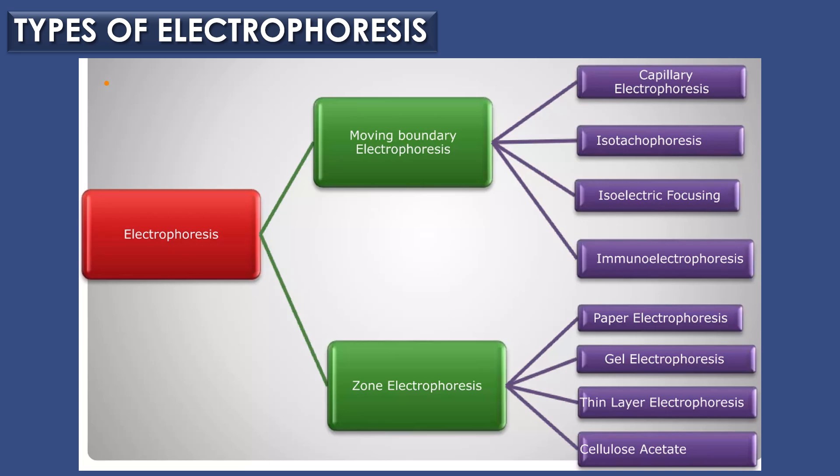Types of electrophoresis: electrophoresis is basically divided into two types — moving boundary electrophoresis and zone electrophoresis. Moving boundary electrophoresis is further categorized into four types: capillary electrophoresis, isotachophoresis, isoelectric focusing electrophoresis, and immunoelectrophoresis. Zone electrophoresis is further divided into four types: paper electrophoresis, gel electrophoresis, thin layer electrophoresis, and cellulose acetate electrophoresis.